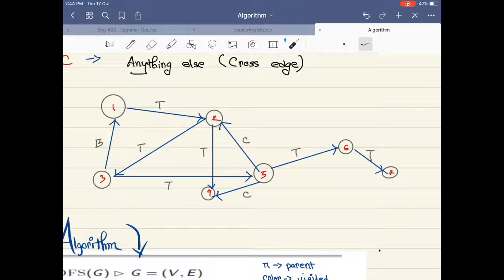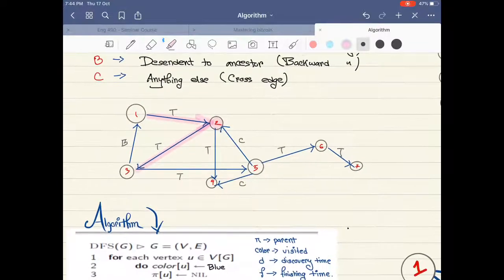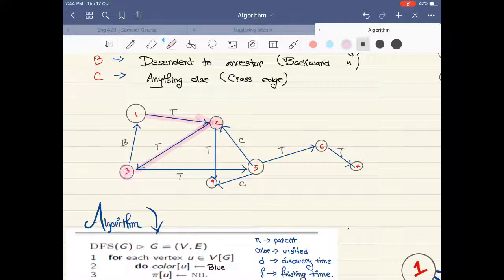Let's look at this example and try to understand what's happening here. Let's say we start from one, so this is our starting point. From one we go to two, so we are finding a new node, right? So this would be a tree edge. From two we are going to three, so we are also finding a new edge, so that's why it's a tree edge.